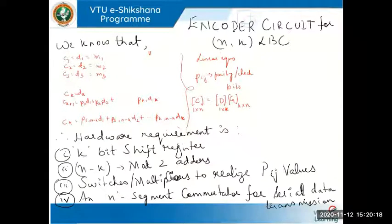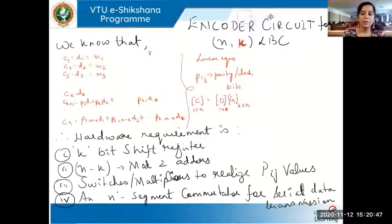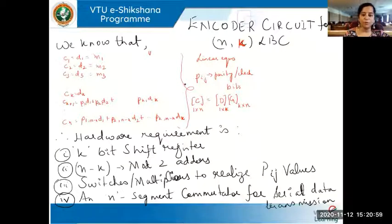Good morning. Let us talk about the encoder circuit for an (n,k) linear block code. Till now we have spoken about what a linear block code is and how a code vector can be obtained given a k-bit data vector — how to get the n-bit code vector in an (n,k) block code. Now we'll continue and try to obtain the encoder circuit for a linear block code.